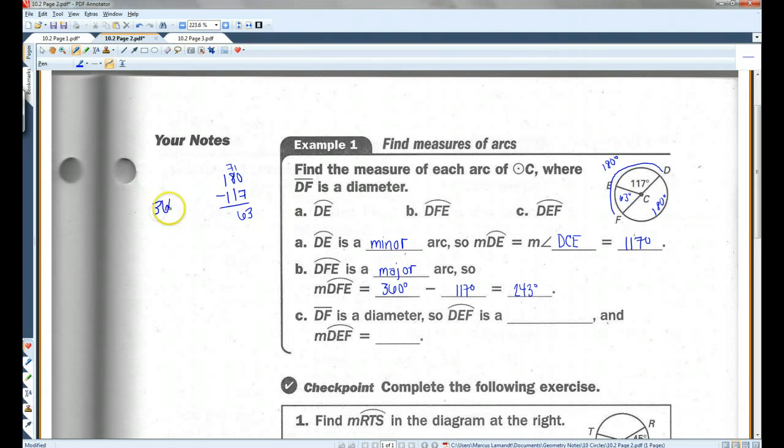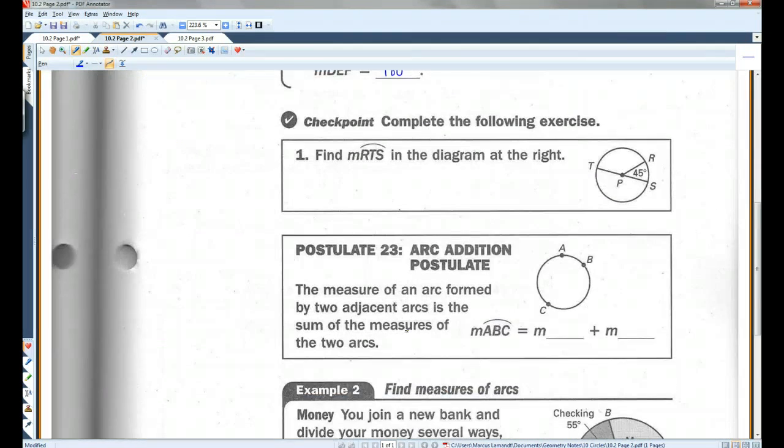And, I'll write that over here. 243 degrees. DF is a diameter. So, arc DEF is a semicircle. And, the measure of arc DEF is 180 degrees. All right. You guys can do this checkpoint.